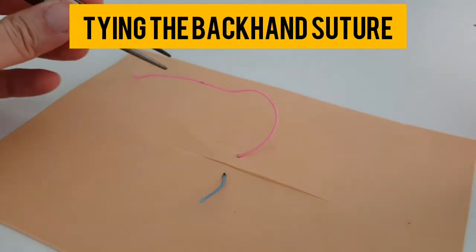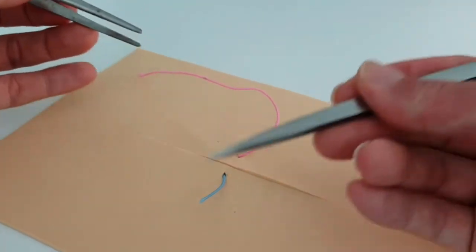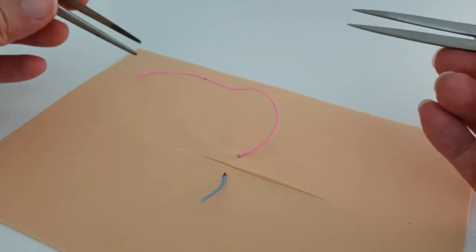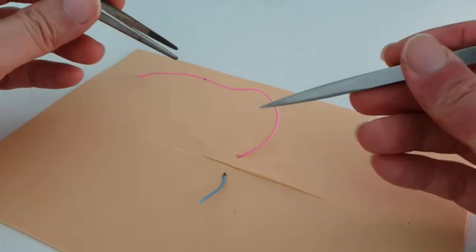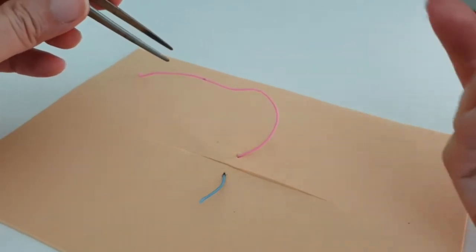Alright, so now we're going to talk about how you're going to tie your knot when your suture has been put in backhand. I know for most of you, the first experience you've had suturing is with the eckie incision, so that's forehand.